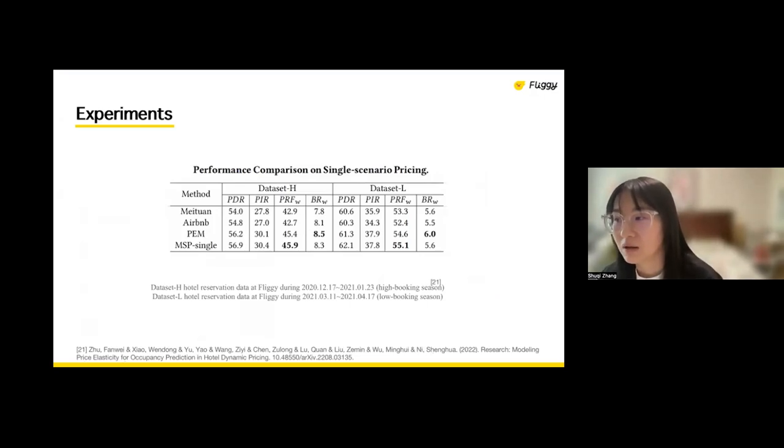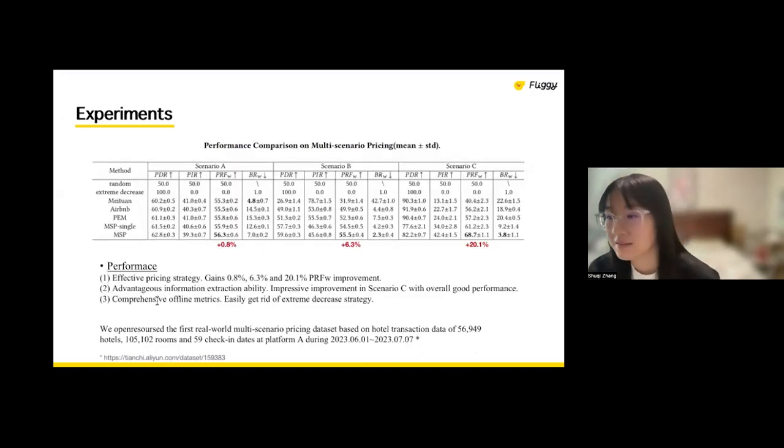To further substantiate our claims, allow me to share the experimental outcomes of our real-world data tests. Since MSP is the first multi-scenario pricing model, to the best of my knowledge, we firstly perform comparison on the open-resourced single-scenario pricing dataset, and we can find that it dominates any other baseline models. And then we compared MSP with the baseline models on the multi-scenario pricing dataset, which is the first real-world multi-scenario pricing dataset that has been open-resourced along with this paper. And MSP gains improvements under the three scenarios, which validates its effectiveness, and it can perfectly avoid the domain seesaw problem. And besides, the impressive improvement in scenario C with overall good performance shows the advantageous information extraction ability of our model.